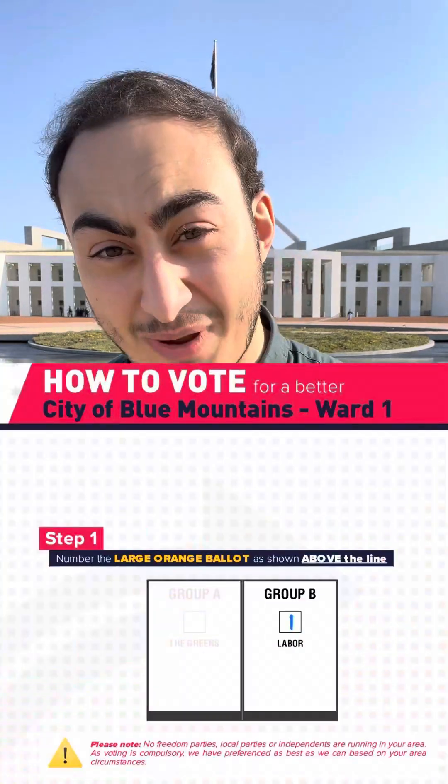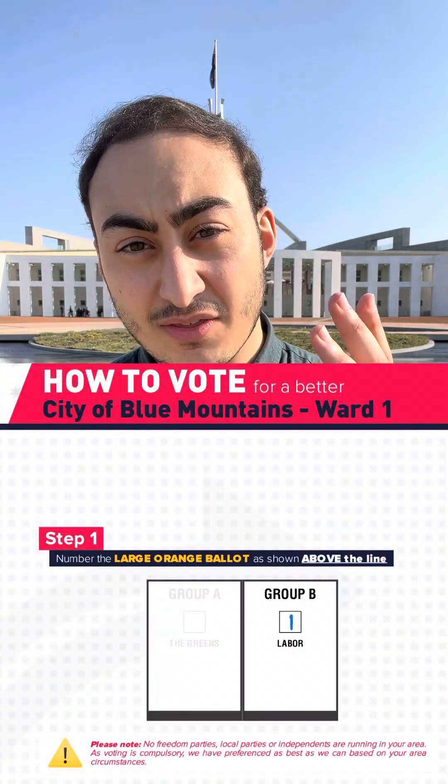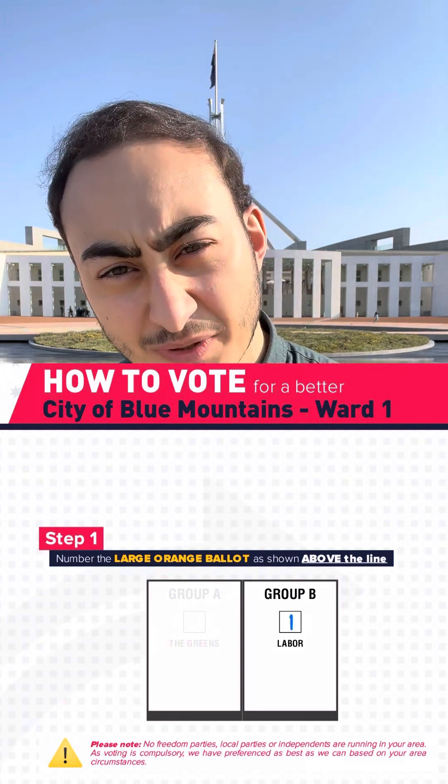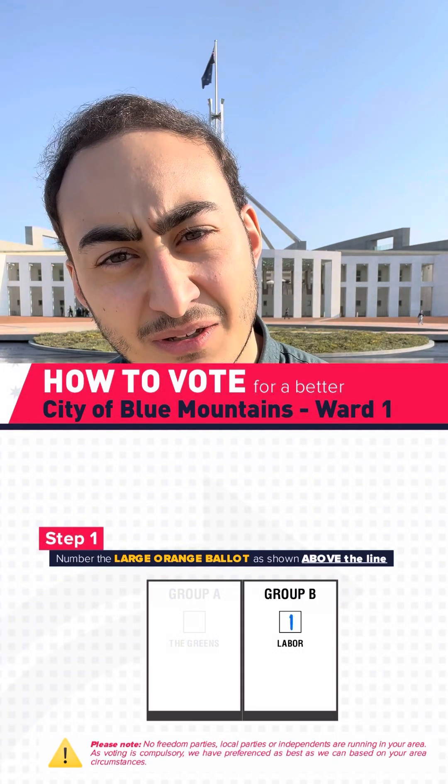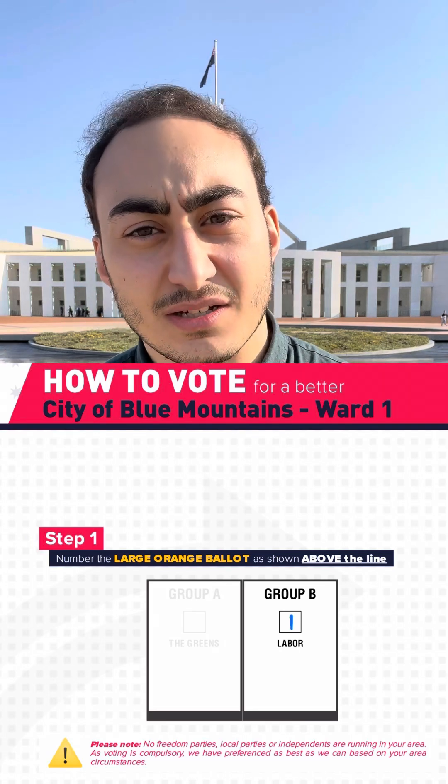I'm warning you with these local elections, these cards are not perfect because there are some areas where the Liberal Party and the minor parties didn't put anyone in. And sometimes there's no independents. For example, in the Blue Mountains, there are three wards where I believe you have to pick between Labor and the Greens. Who do you pick? So you're going to see some how to vote cards where we have Labor or the Greens and you're going to be like, it doesn't make any sense.